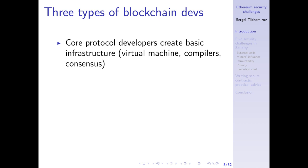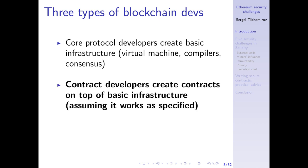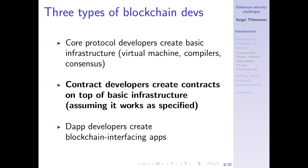To limit the scope of this talk, I will now discuss three types of blockchain developers. Core protocol developers create the basic low-level infrastructure — the virtual machine, the languages and compilers, and the consensus mechanisms. This is not our main focus today. We assume this basic infrastructure is working as intended. We are focusing on the second type — contract developers who build smart contracts on top of this existing infrastructure. There is also a third type — application developers who create applications in more traditional languages and frameworks, such as web applications in JavaScript or mobile applications that interact with blockchains using some kind of API.